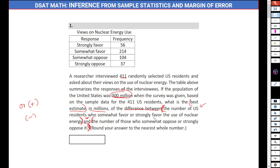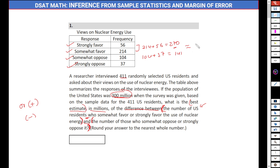Let me break it down further. The number of US residents who somewhat favor is 214, and 'or strongly favor' means you add 56. So that is 214 plus 56, which equals 270. Then you subtract: 270 minus the number who somewhat oppose or strongly oppose, which is 204 plus 37, giving 241. So 270 minus 241 is nearly equal to 129.